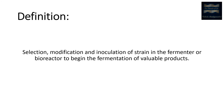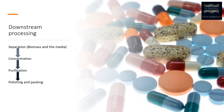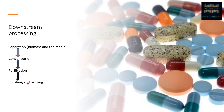Once the fermentation process is done, the next thing we do is the recovery of our product, and that is called downstream processing. First, we perform separation based on where our desired product is present — whether it is in the biomass or in the media. If the product is present in the media, we take out the biomass and, by centrifugation or other lysis methods, recover and concentrate the desired product. Then we perform purification and finally formulate the product by adding excipients, drying, and packaging.